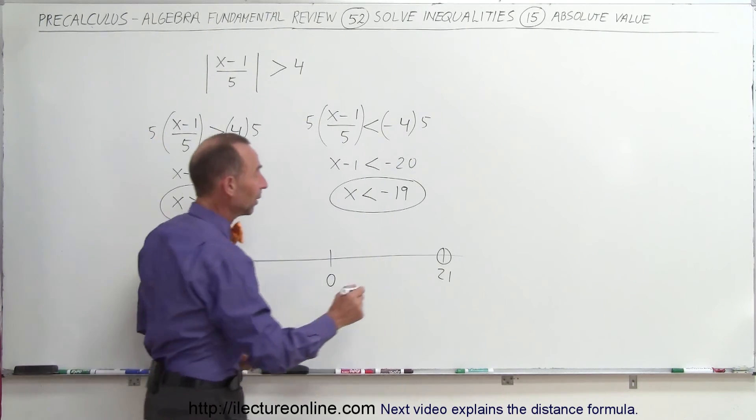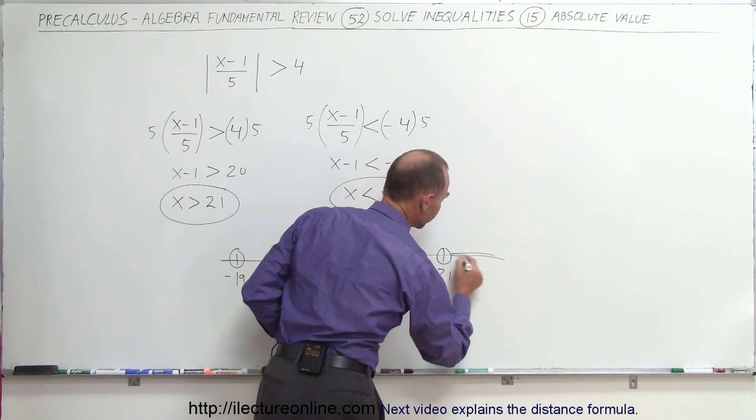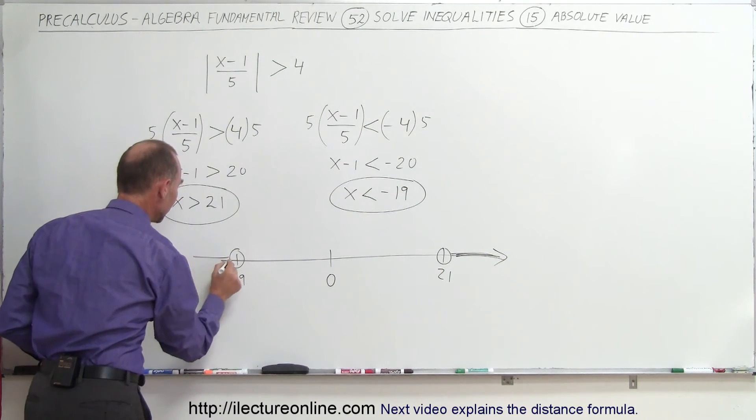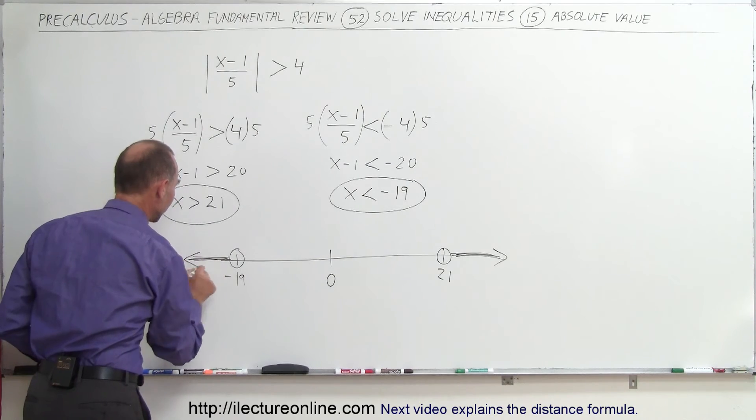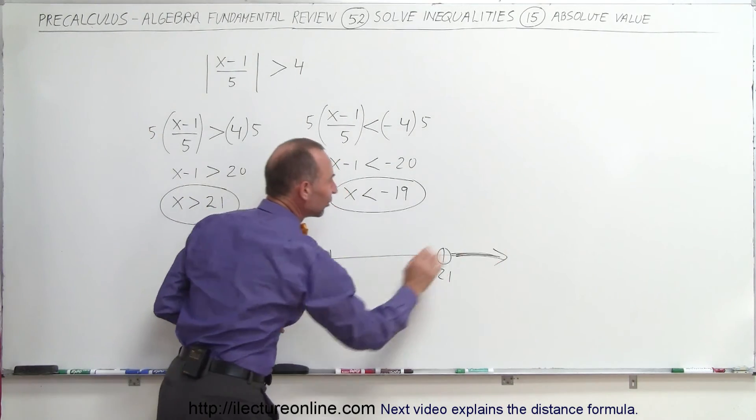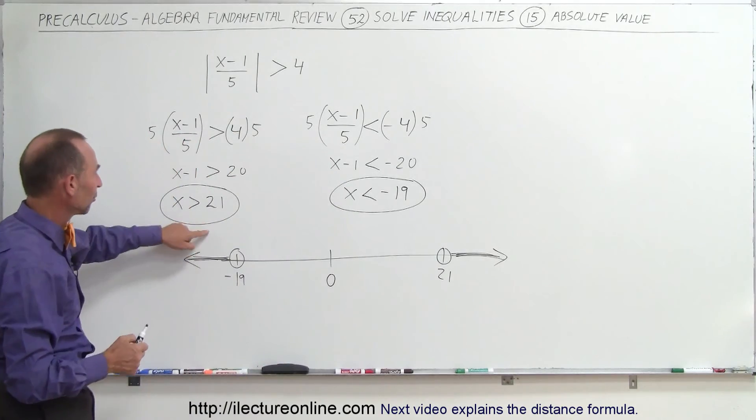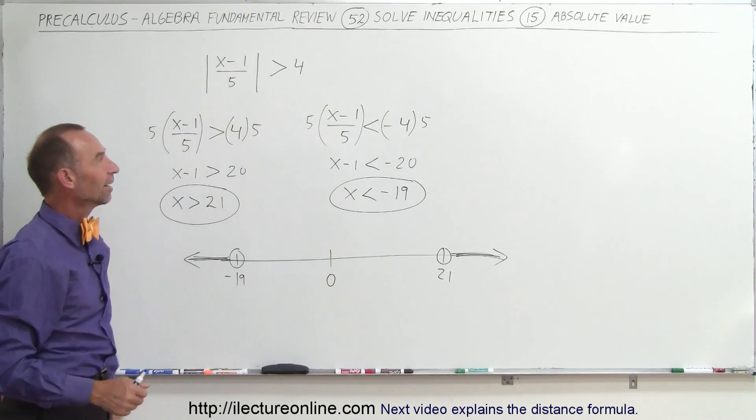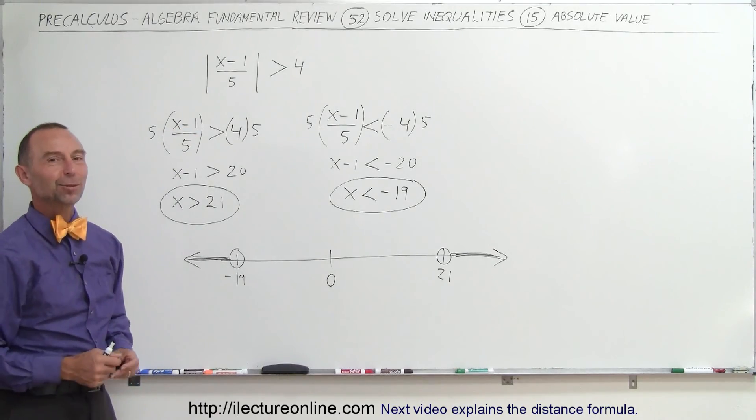For x greater than 21 is everything to the right of 21, and for x less than negative 19 is everything to the left of minus 19. So here are the solution sets. As long as x is greater than 21 or less than minus 19, it will satisfy this inequality. And that's how we do that.